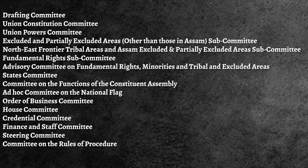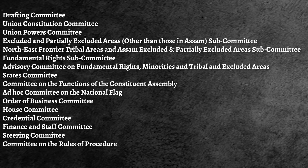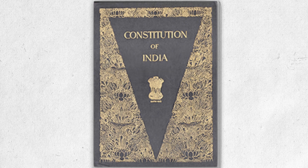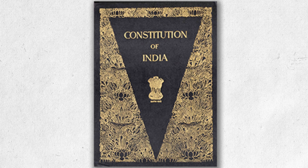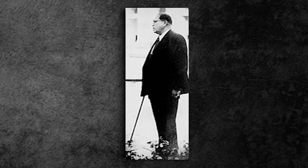17 committees were formed in the Constituent Assembly, focusing on different subjects such as fundamental rights, tribal areas, union powers, and others. They prepared their reports, which were reviewed and compiled into a draft constitution. This was discussed and redrafted twice more until the final document — the Constitution — was achieved. The drafting committee, led by Dr. Ambedkar, played a pivotal role throughout this rigorous and deliberative process.